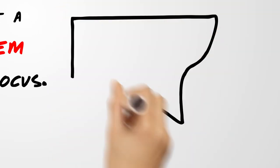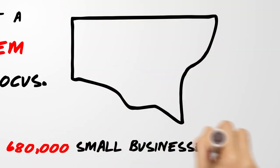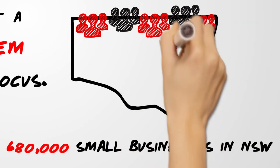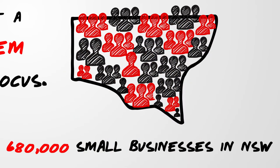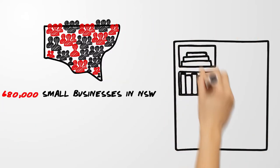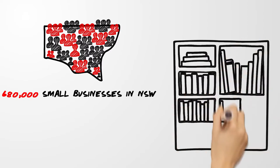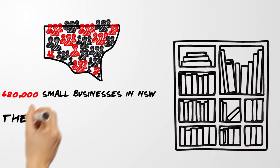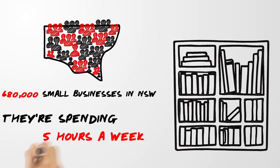In New South Wales there are around 680,000 small businesses employing about half of the workforce, and each of those employers, particularly in the high-risk industries, can be complying with up to 75 different regulations each and they're spending about five hours every week purely on compliance.